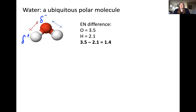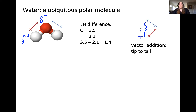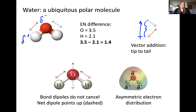It will become clear in a moment why I made these dipoles different colors. When we go to add the dipoles together, you'll notice they do not cancel. We align the tail of one vector — the blue vector — with the tip of the other vector — the red vector — and you'll notice there is a resultant area that comes from this tip-to-tail addition. This is called the molecular dipole.